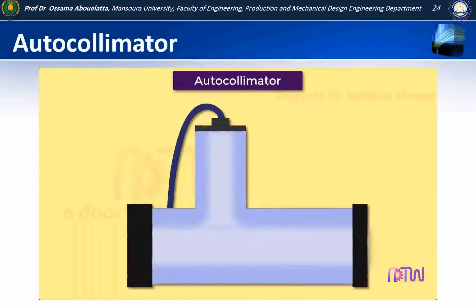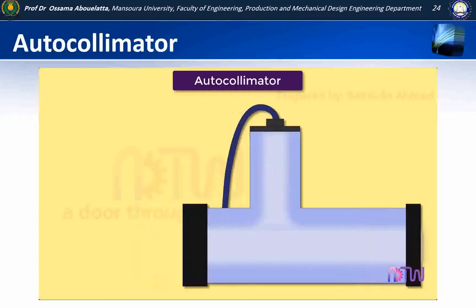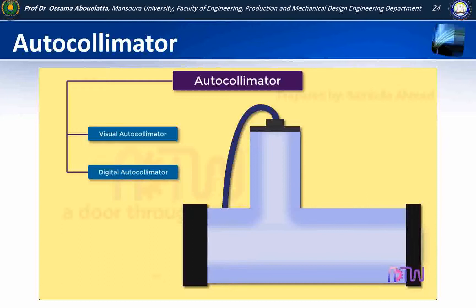An autocollimator is an optical instrument. It is a non-contact type instrument which is used for measuring angles. They are used to align components and measure deflection in optical or mechanical systems. There are basically two types of autocollimators: visual autocollimator and digital autocollimator. This video covers the visual autocollimator.